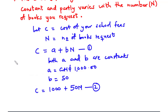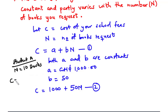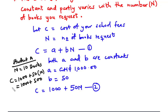Given that student A makes a request of 10 books, so n equals 10, then the cost of the school fees of student A becomes C equals one thousand plus 50 times 10. So we have one thousand plus 500, meaning C becomes one thousand five hundred Ghana cedis — that would be the cost of student A's school fees.